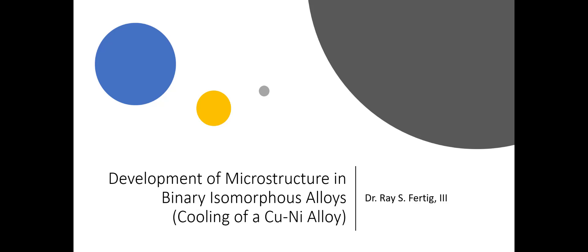Today we want to talk a little bit about the development of microstructure in binary isomorphous alloys. We've talked in our last lecture about how to analyze those binary isomorphous phase diagrams. Now we want to talk about what that implies for the microstructure of these materials.